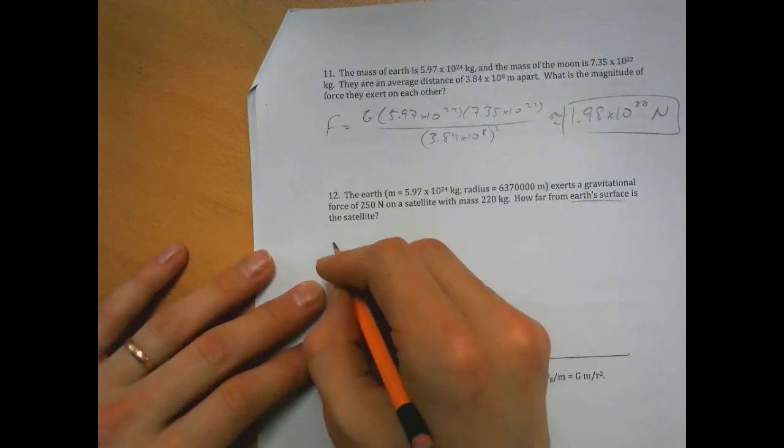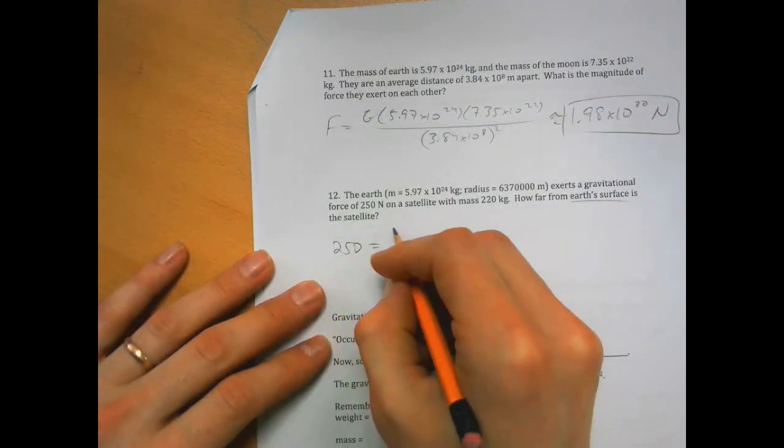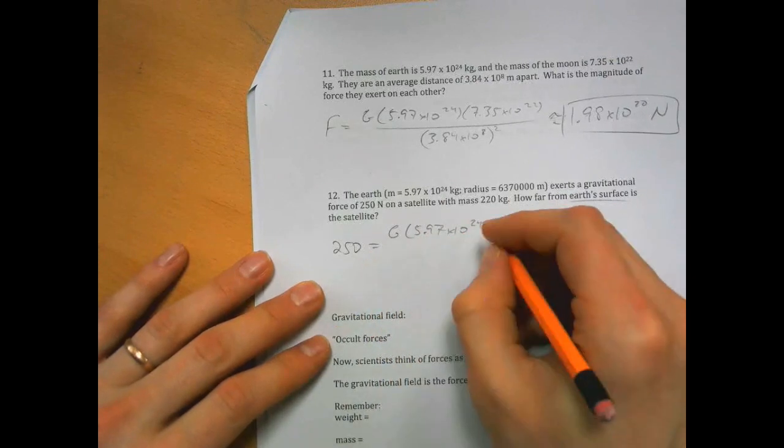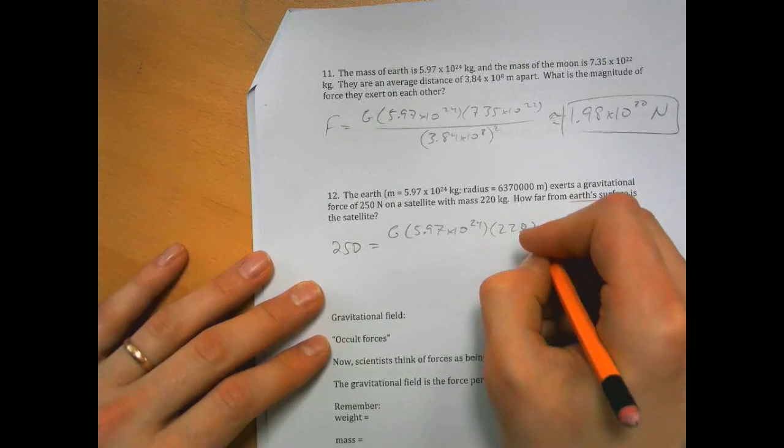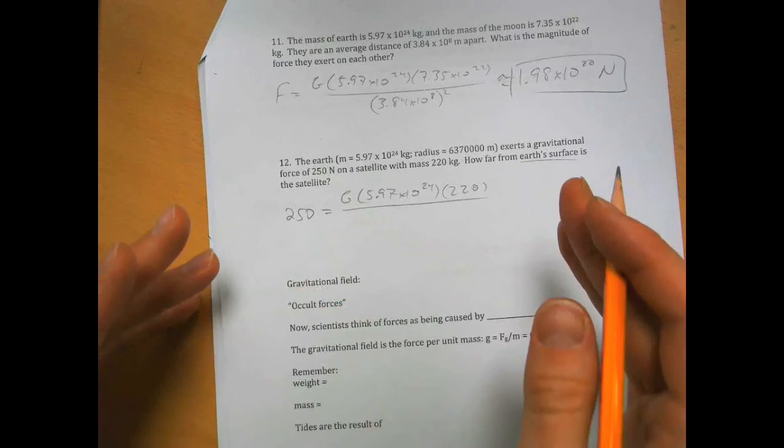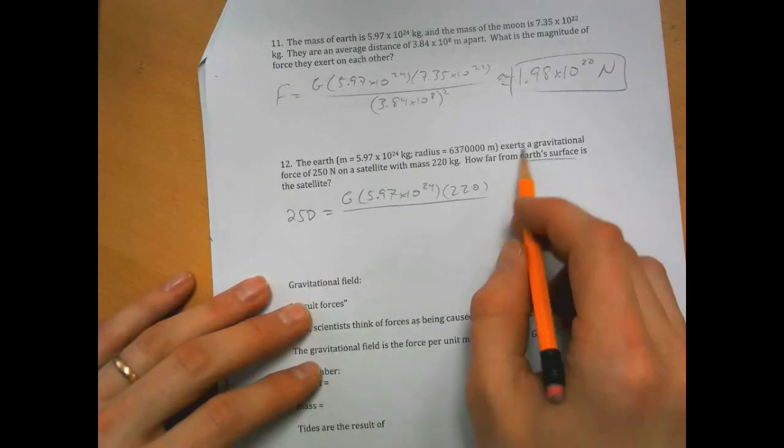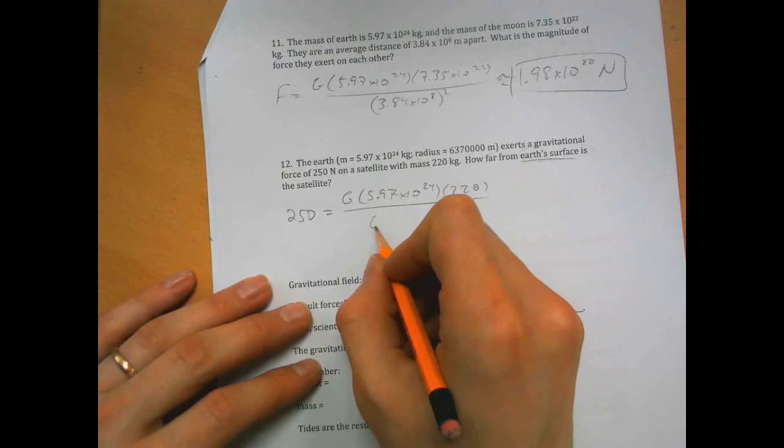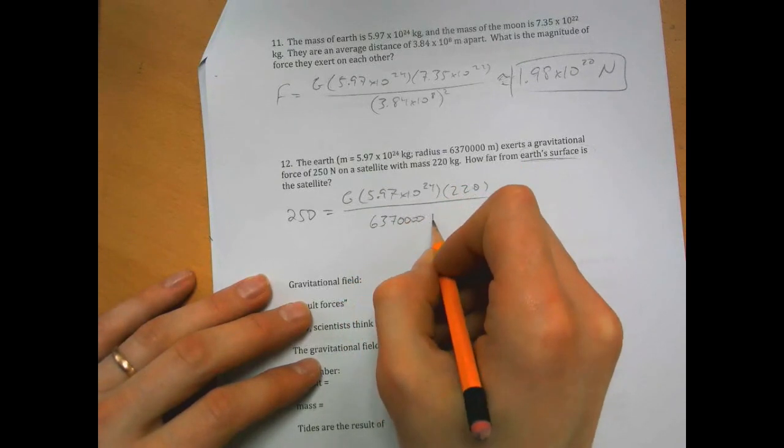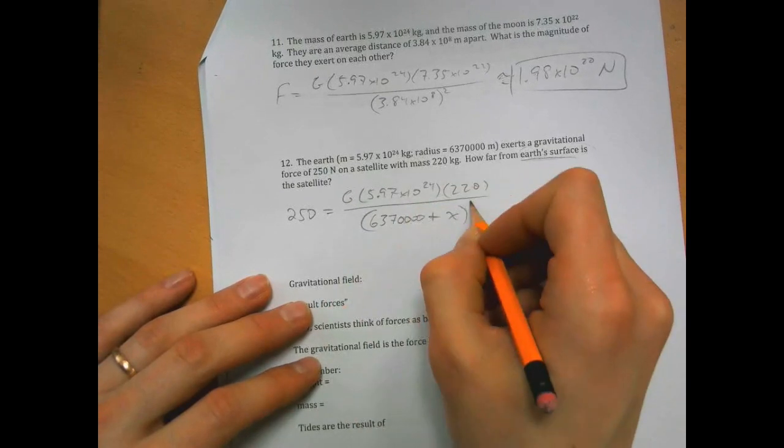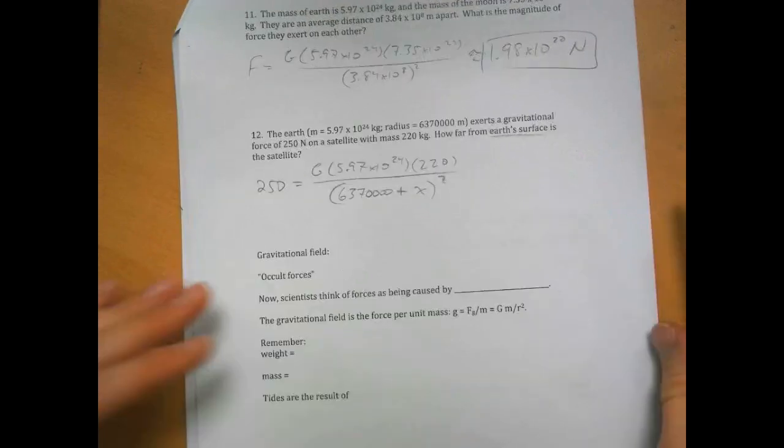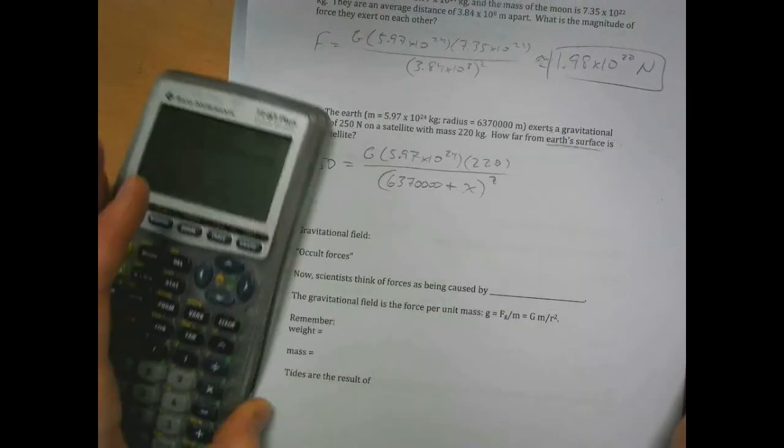So r, in this case the force is 250, and that's equal to g times mass of Earth, times mass of satellite, over r squared. Well that r is the distance from the center of the Earth. The question is how far from the Earth's surface is the satellite, so that's going to be the radius of the Earth plus whatever unknown value we want, and this x is going to be the answer.